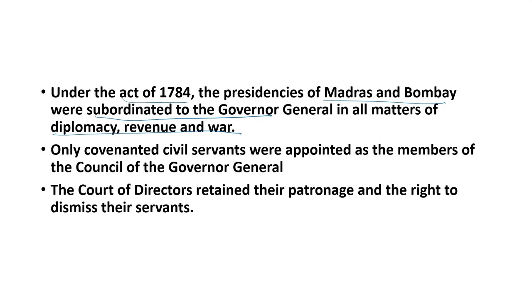Another change was that only covenanted civil servants — higher civil servants — were appointed as members of the Council of the Governor-General; uncovenanted civil servants were not appointed. Still, the Court of Directors retained their patronage: those who enjoyed the patronage of the Court of Directors got appointed to covenanted and uncovenanted civil posts and offices of the English East India Company.